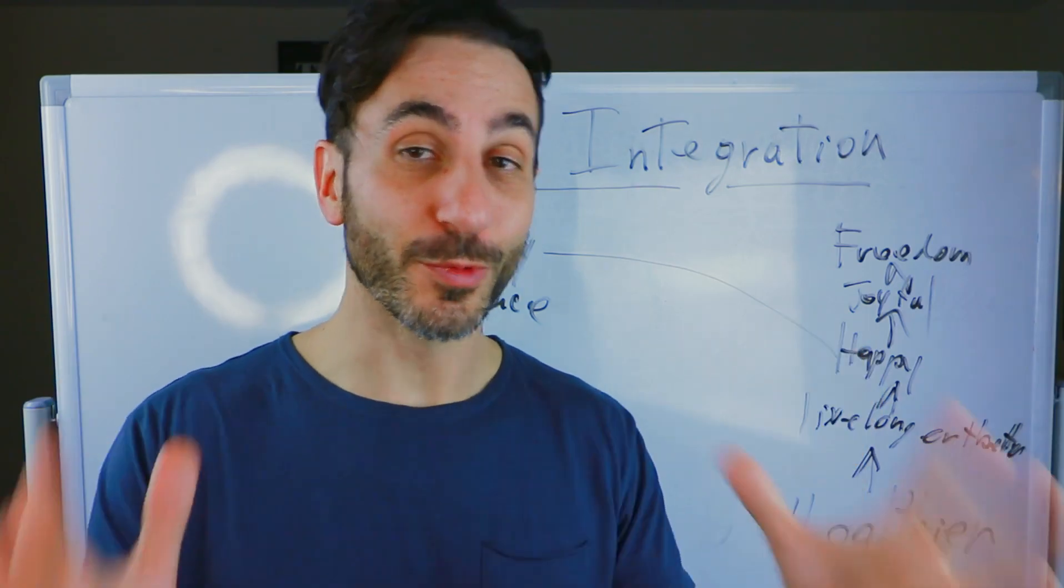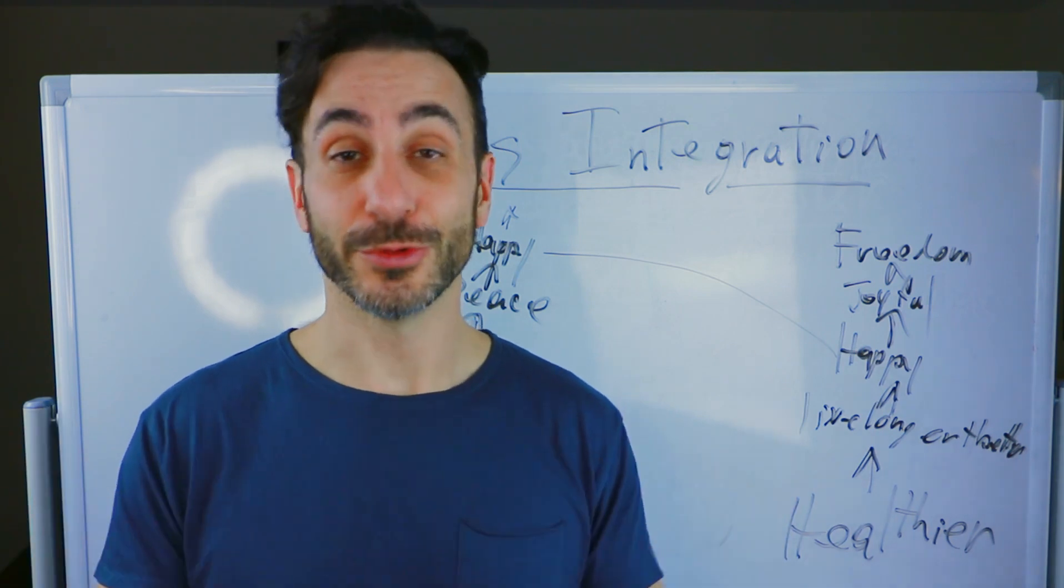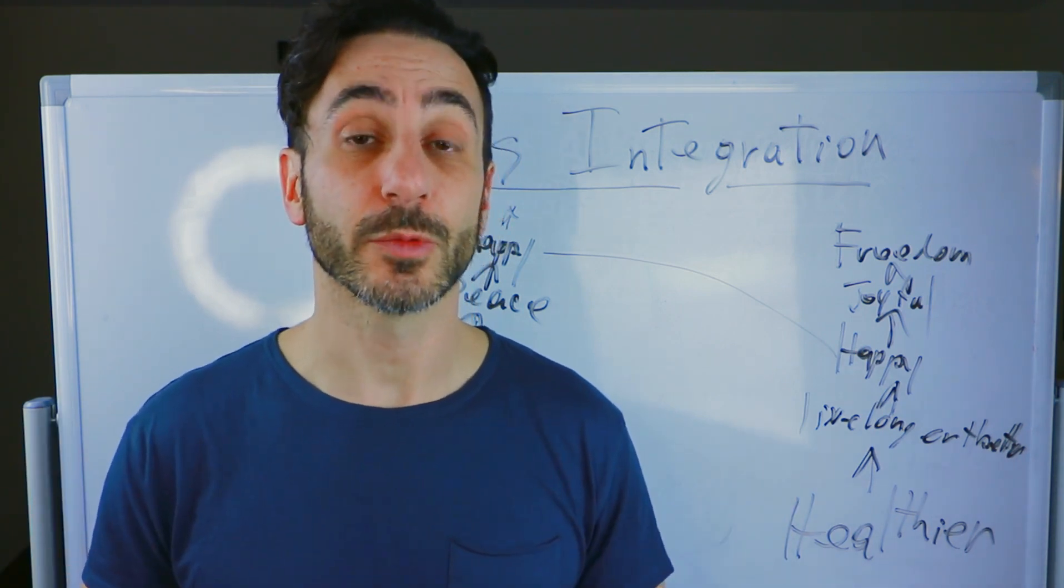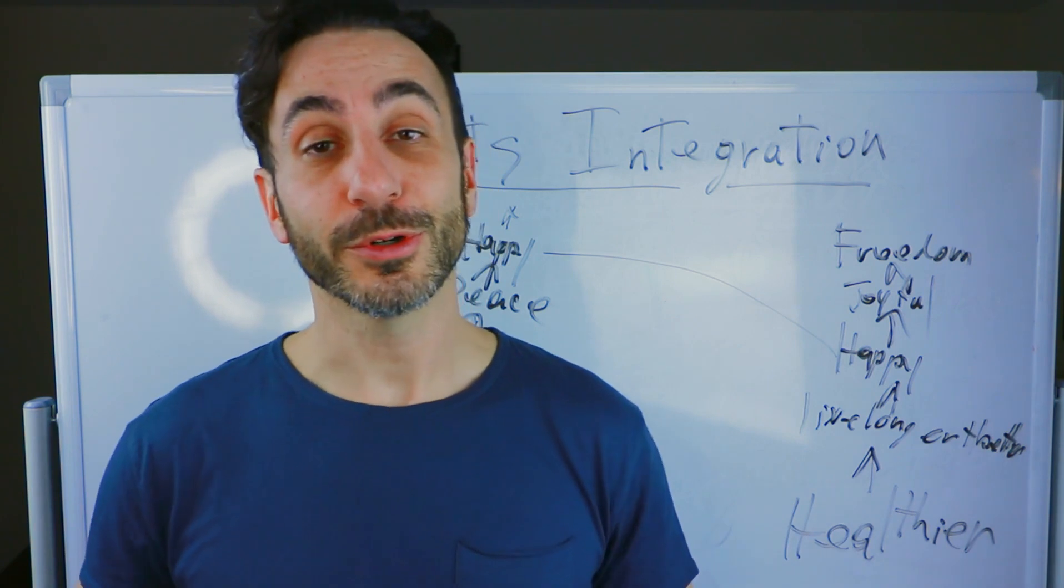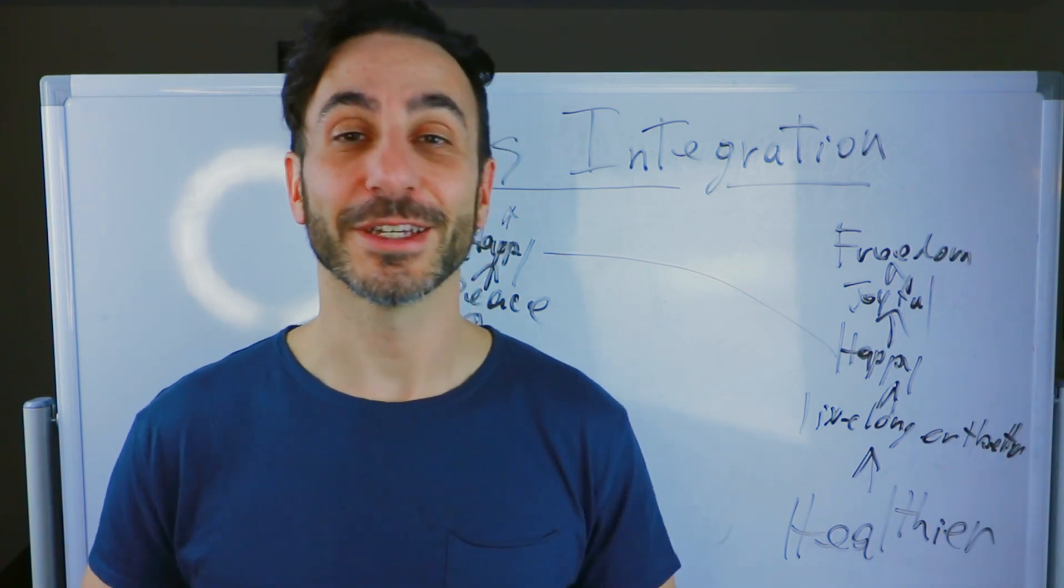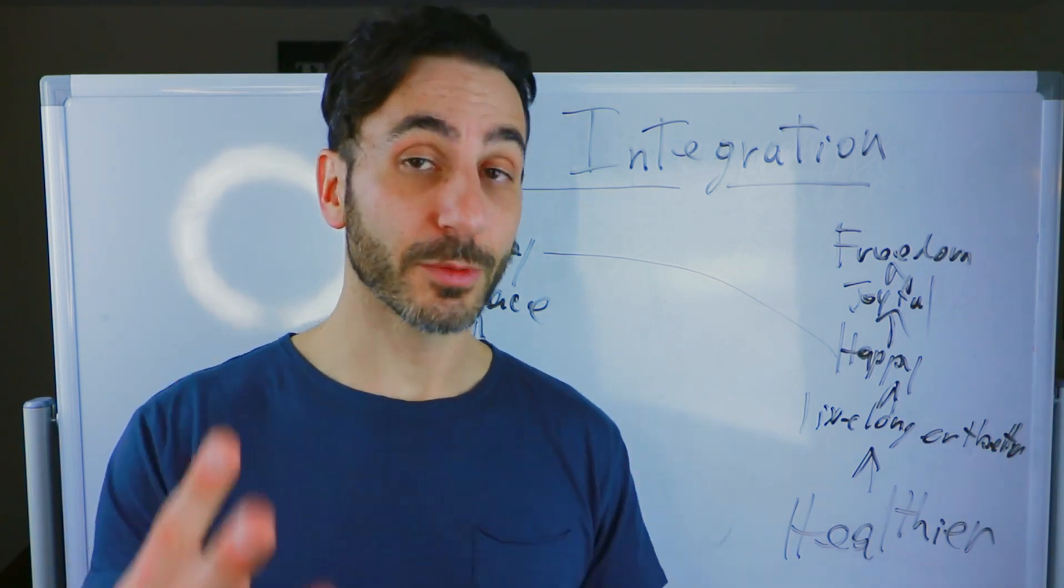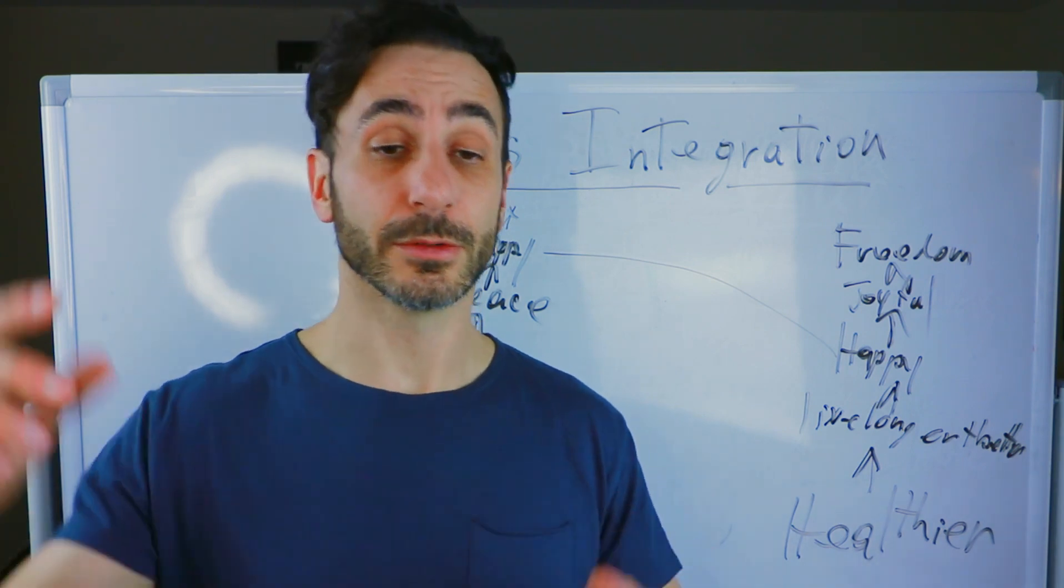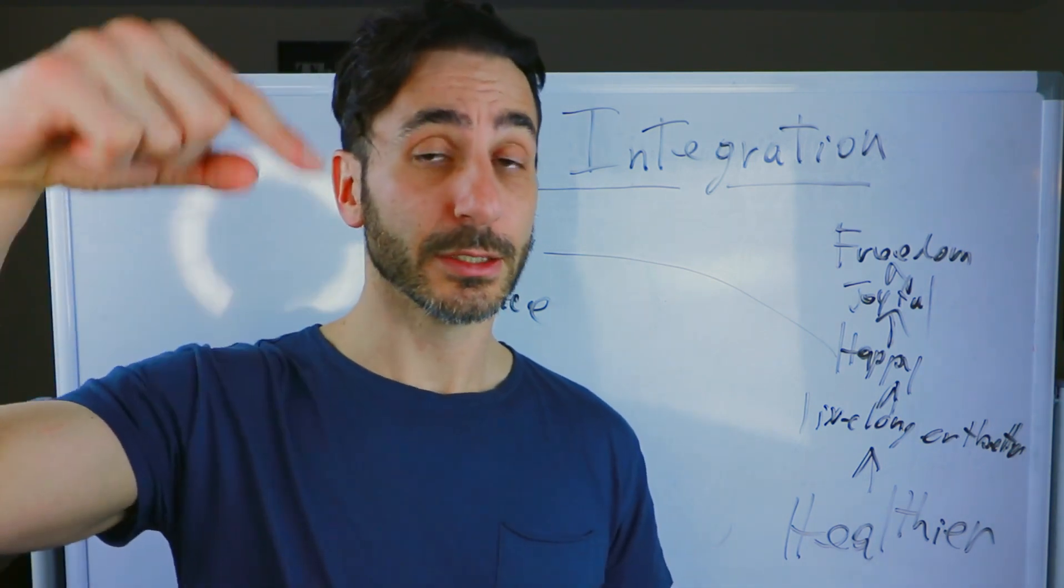Okay. Now, you know one way to integrate two parts of yourself, two parts, especially if they're in conflict with you. If you would like more cool NLP techniques like this one, I have a four part video series. You can go to the description right here. There's a link. You click on that link.